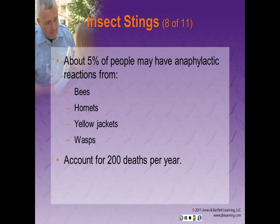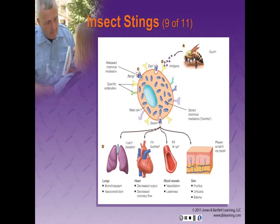This type of allergy accounts for about 200 deaths a year and can cause anaphylaxis. Following a sting, released chemical mediators and specific antibodies rush to the site and cause bronchial spasm and vasoconstriction in the lungs. The heart decreases its cardiac output as well as decreased coronary flow. The blood vessels dilate and leak, and the skin develops pruritus, urticaria, and edema.